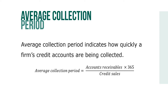Average collection period indicates how quickly a firm's credit accounts are being collected. The average collection period equals accounts receivables times 365 over credit sales. Note, when credit sales figures are not available, net sales may be used instead.